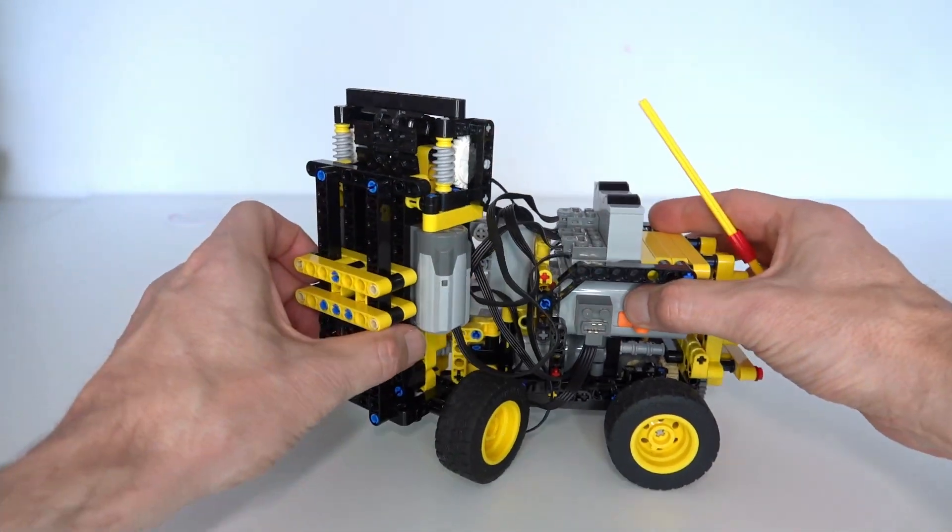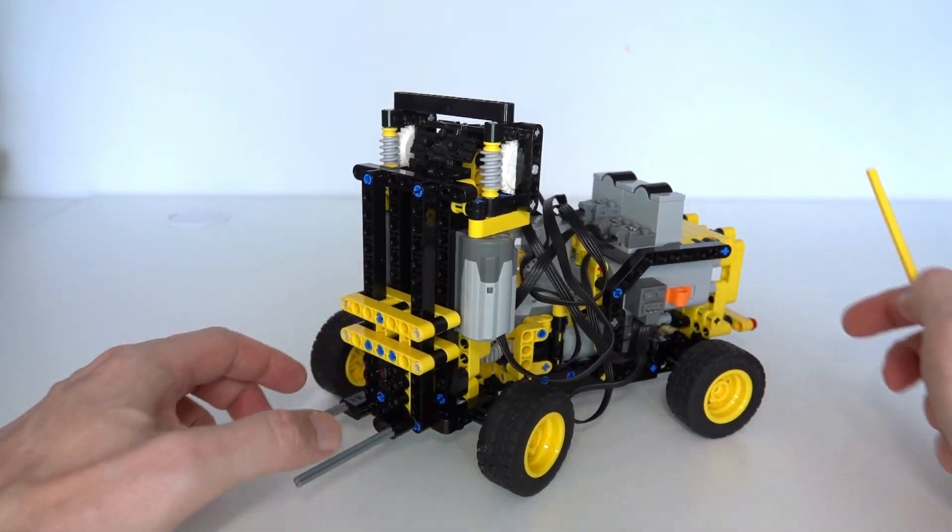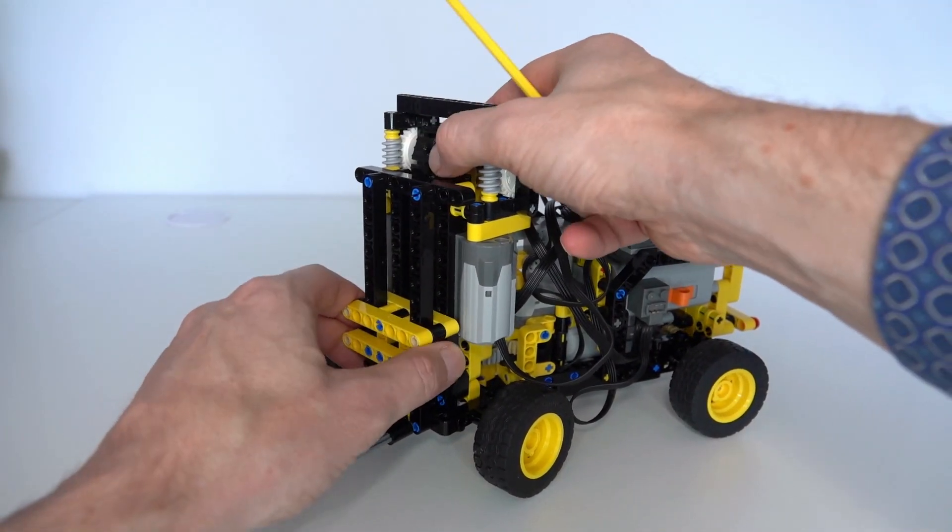These gears then drive under here a sprocket gear that connects onto this track, and then the track is used for connecting onto the forks themselves for the lowering and raising. So that is how the front forks raise and lower. I'll now demonstrate the model in action.